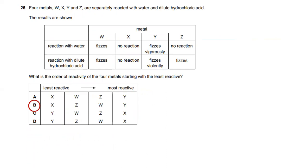What is the order of reactivity of the four metals from least to most reactive? The answer will be: least reactive is W, followed by Z, followed by Y, and then finally most reactive is X. X reacts vigorously with water and violently when it reacts with diluted hydrochloric acid.